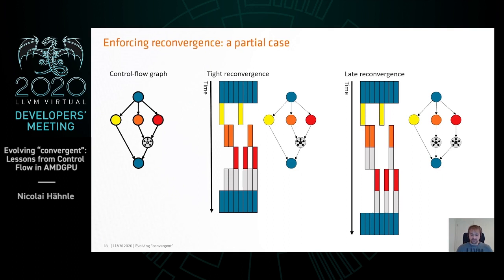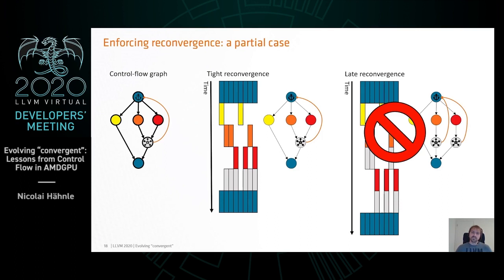A slightly more complex CFG shows again the case where we always reconverge versus a case where we don't reconverge for the convergent operation. Adding an anchor at the top again enforces maximal reconvergence. Threads that executed the same dynamic instance of the anchor but took a path that never reaches the convergent operation — that's fine, we don't care about those. But threads that do reach the convergent operation do so together in the same dynamic instance if they went through the anchor together.